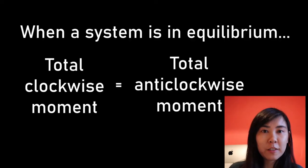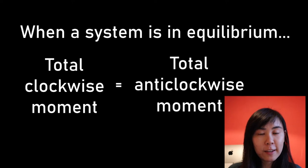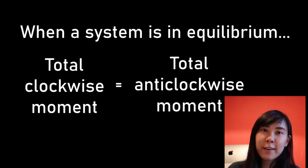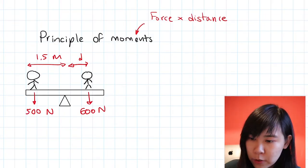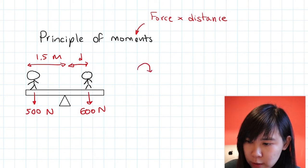The principle of moments tells me that if a system is in equilibrium, or it's balanced, then the total clockwise moments must be equal to the total anticlockwise moments. I'm going to write down this principle as the first line of the solution. So the total clockwise moment is equal to the total anticlockwise moment.